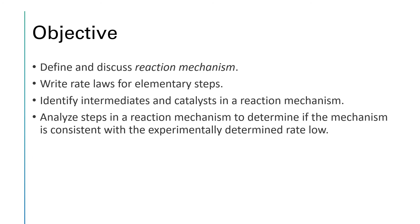So we have discussed reaction mechanisms. We've seen how we write rate laws for elementary steps from the molecularity of the elementary steps, and we have looked at intermediates — the chemicals that are made in one step and used up in another. Catalysts will be in the next video. And we analyzed a mechanism to see if it was consistent with the experimentally determined rate law.